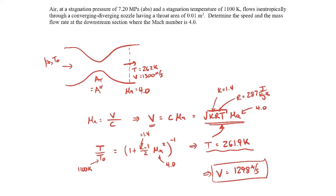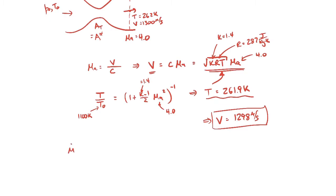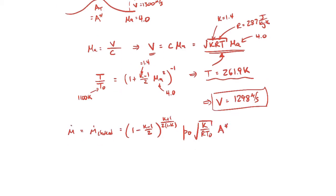The next part of the problem is to determine the mass flow rate at the downstream section where the Mach number is 4. One approach is to use the choked flow mass flow rate, since the Mach number at the throat equals 1 — the flow goes from subsonic to supersonic conditions. So the mass flow rate here will be the choked flow mass flow rate. Referring to the formula sheet, that expression gives us what we need.